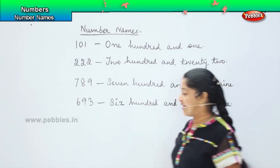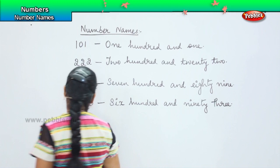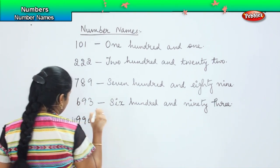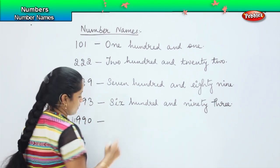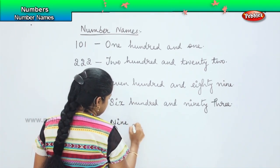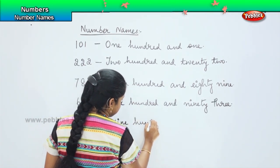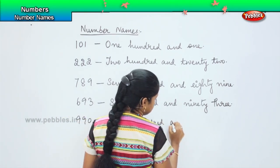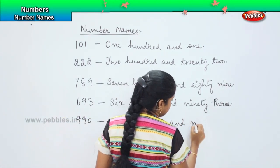Let me give you a tricky one. Say if I write nine, nine, zero — how will you write it? Nine hundred and ninety.